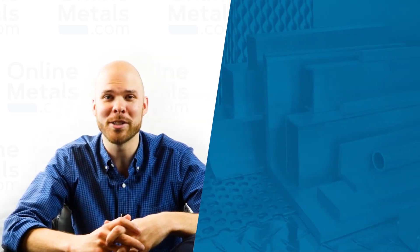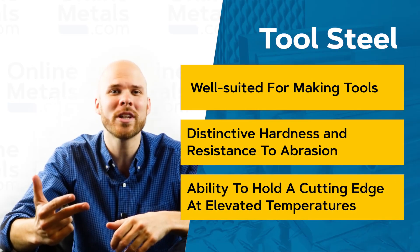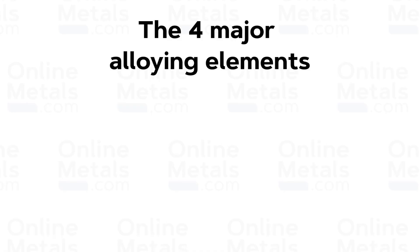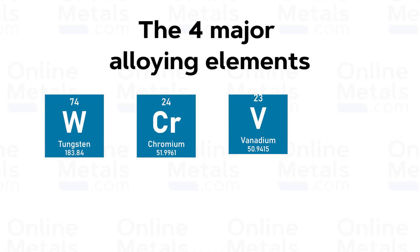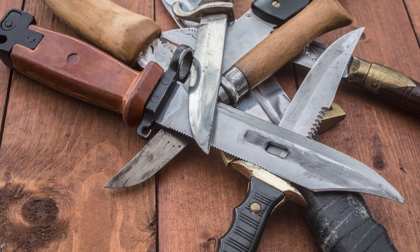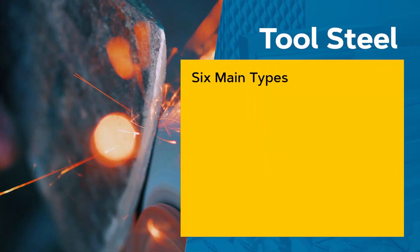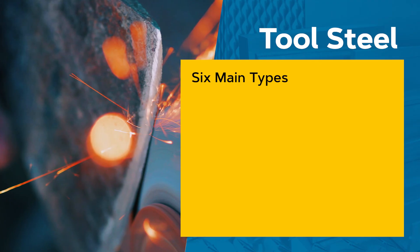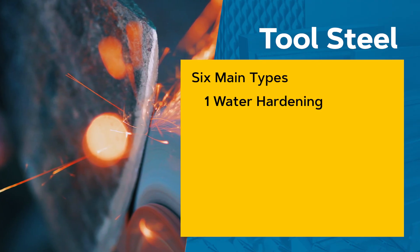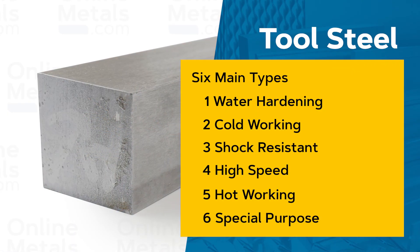Tool steel is particularly well suited for making tools due to its distinctive hardness, resistance to abrasion, and its ability to hold a cutting edge at elevated temperatures. The four major alloying elements in tool steel are tungsten, chromium, vanadium, and molybdenum. Tool steel is often used by bladesmiths in making knives, axes, swords, and much more. According to AISI and SAE specifications, there are six major types of tool steel: water hardening, cold working, shock resistant, high speed, hot working, and special purpose. These grades are also assigned a letter designation to help clarify what they are.